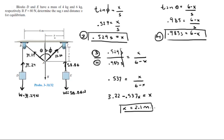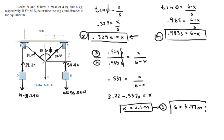Plugging x equals 2.1 meters back into equation 3 gives s equals 3.97 meters. So the final answer: x equals 2.1 meters and s equals 3.97 meters, which is what the problem asked us to determine.